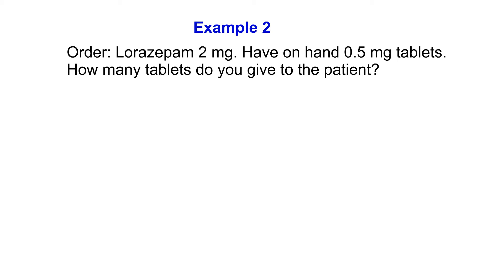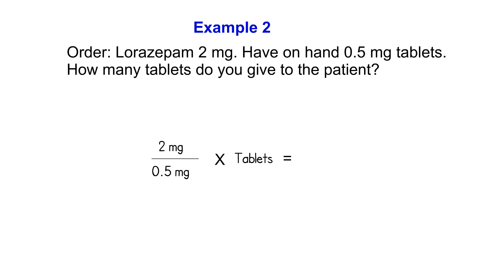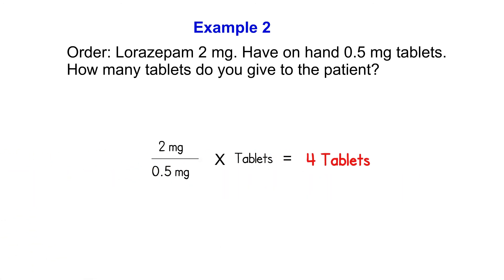So we have a total dose of 2 mg. We put that on the top. And then what we have on hand is 0.5 mg. Put that on the bottom. And we times that by tablets, which is the quantity we're using. So we have 2 mg divided by 0.5 mg times tablets, which will equal 4 tablets. So the correct answer is 4 tablets.